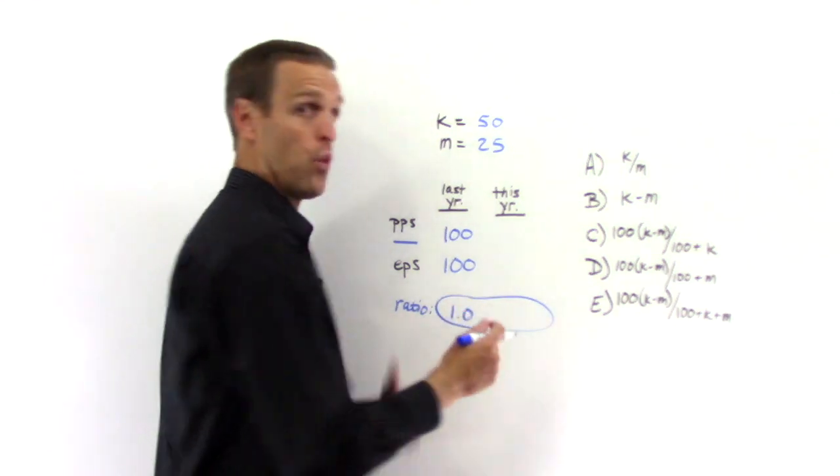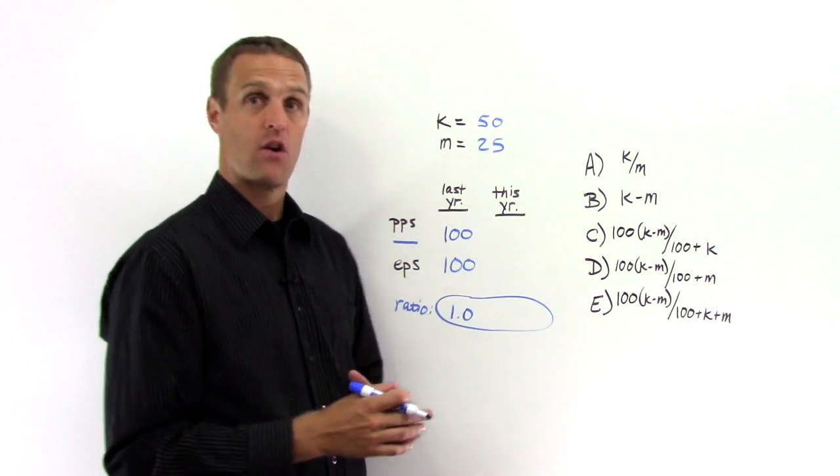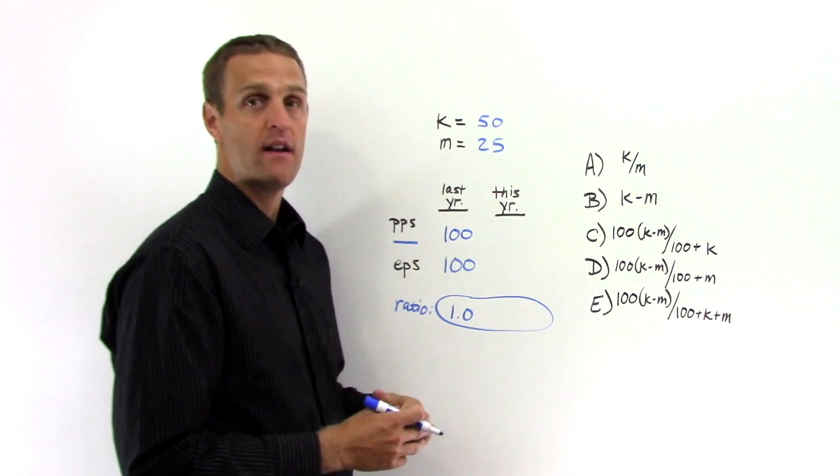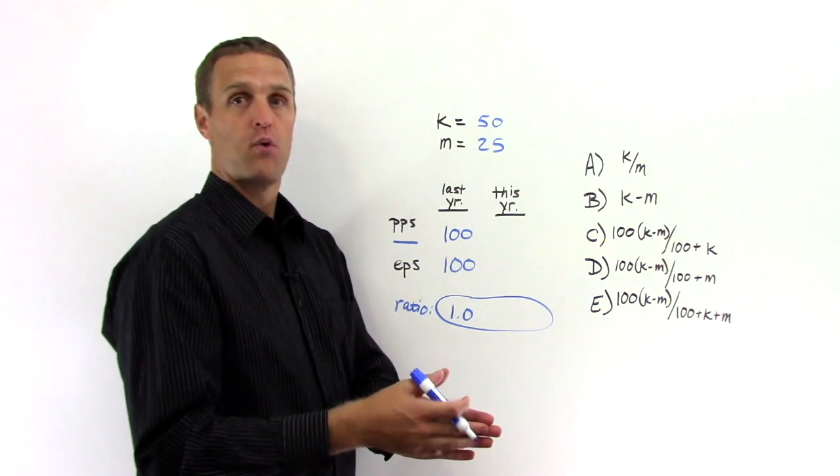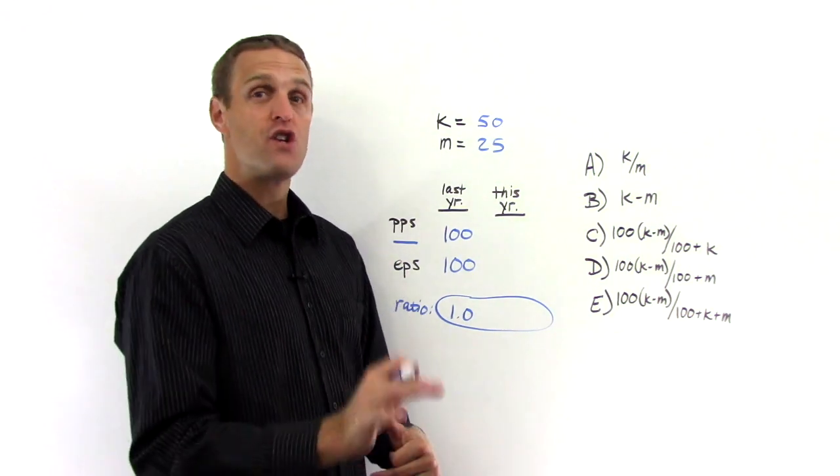So what's the ratio of PPS to EPS last year? Just one to one, which is 1.0. So that's the ratio, one to one. A good, easy starting point to calculate things like percent change.